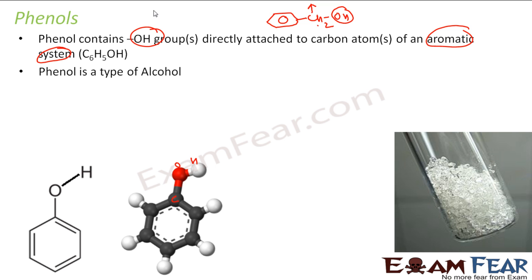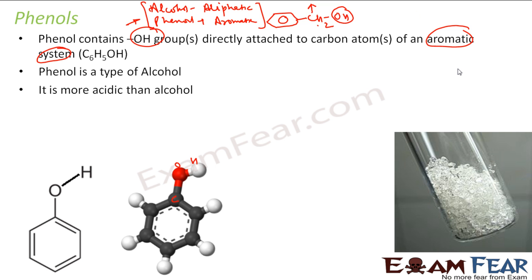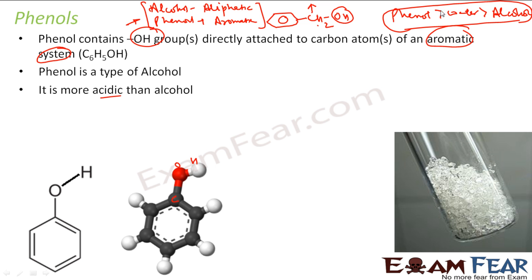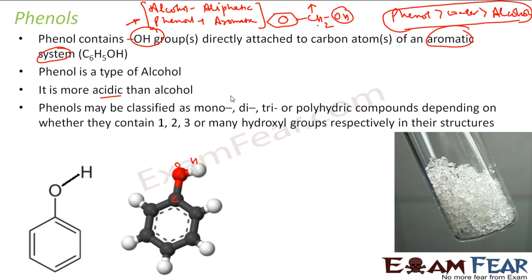There are different definitions — one group says alcohol has to be aliphatic while phenol is aromatic, and another group says phenol is a subtype of alcohol. What's important is that phenol is more acidic than water and more acidic than alcohol. We will explain in detail why phenol is more acidic than alcohol.